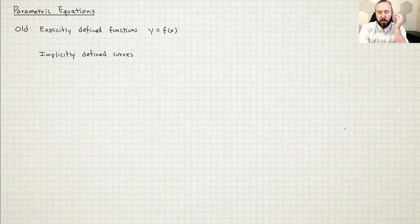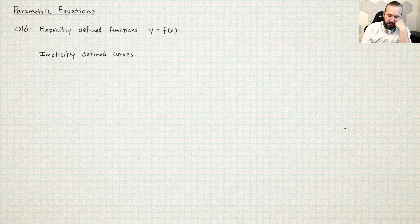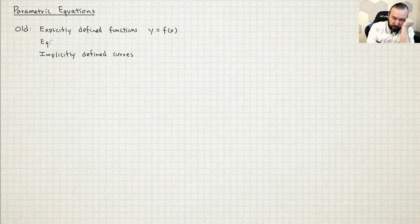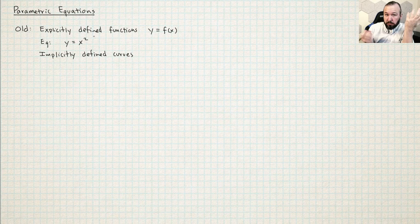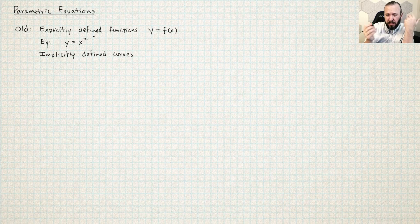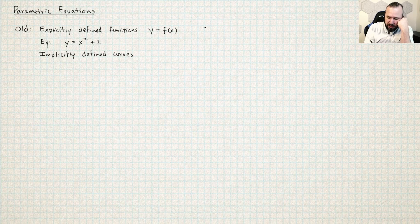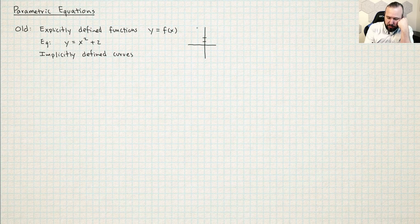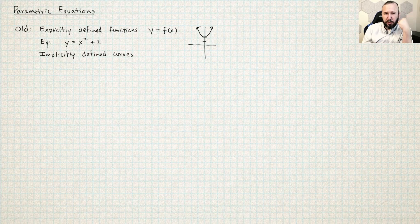The way that we're comfortable defining curves in math is by either using explicitly defined functions. For example, you're probably pretty familiar with the equation of a parabola, y equals x squared. Maybe if I put a plus 2 out here at the end, then this will produce a parabola that has been shifted up two units. So we get a nice picture like this. This is pretty comfortable to us.